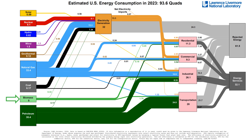Biomass can also be considered a renewable energy source. Unlike the other renewables, biomass is primarily going to end-use sectors like transportation and heating for buildings and industry. Lastly, nuclear is used exclusively for electricity generation in this country. We can see that 32 quads of energy go into the generation of electricity, but only 13.3 quads come out as usable electricity. That 13.3 quads of usable electricity is split between residential, commercial, and industrial, with a small portion going to transportation.